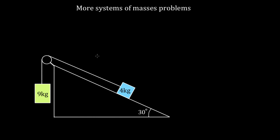Just to show you how powerful this approach is of treating multiple objects as if they were a single mass, let's look at this one. We've got a nine kilogram mass hanging from a rope, and that rope passes over a pulley, then it's connected to a four kilogram mass sitting on an incline at 30 degrees. The coefficient of kinetic friction between the incline and the four kilogram mass is 0.2, so there's gonna be friction as well.